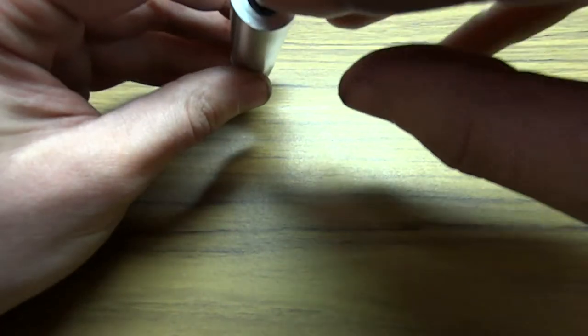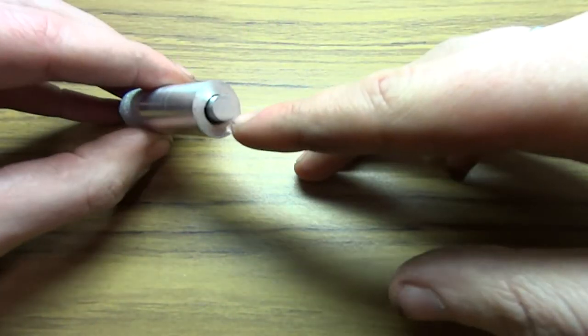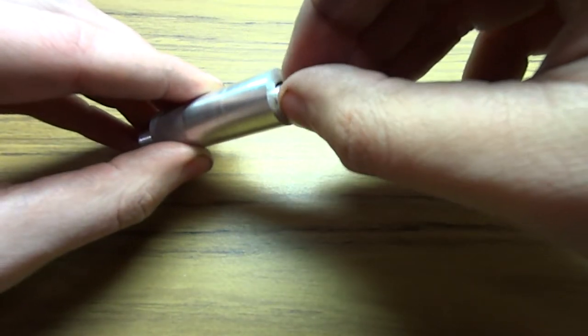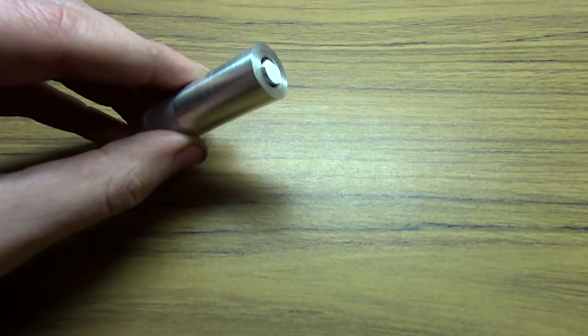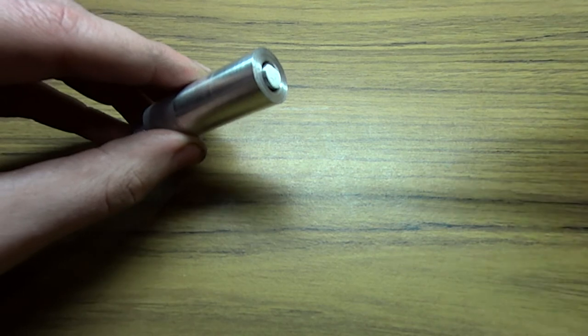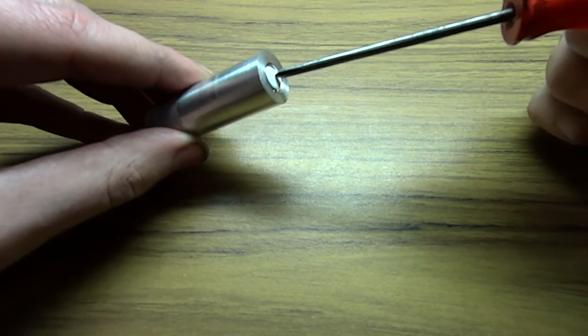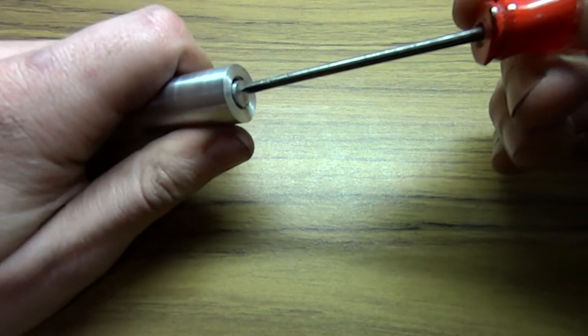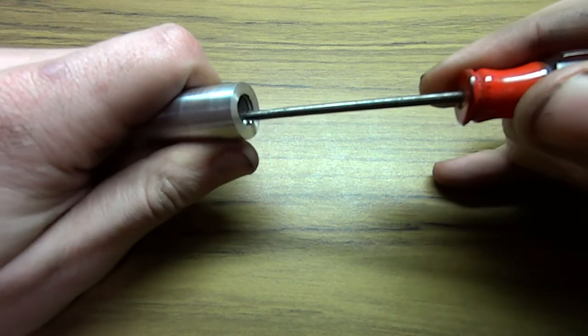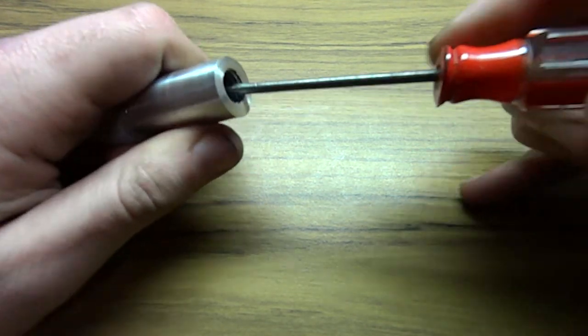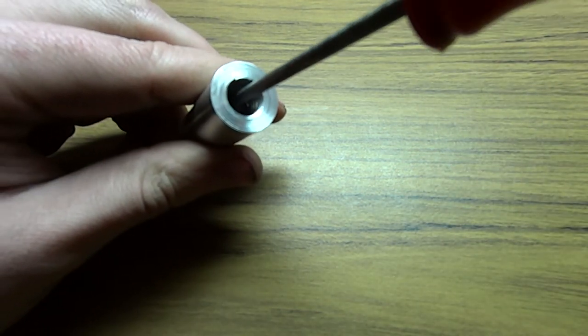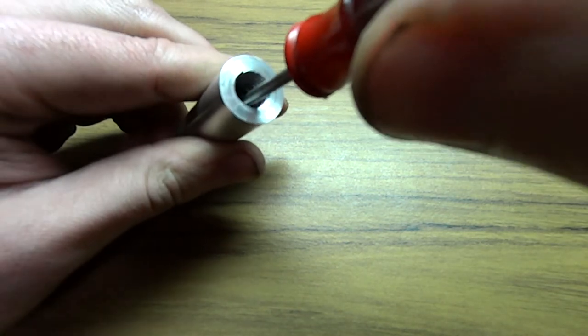So what happens here is this little guy with the O-rings on it gets pushed down inside there and it seals pretty well, and then that gets pushed down inside.